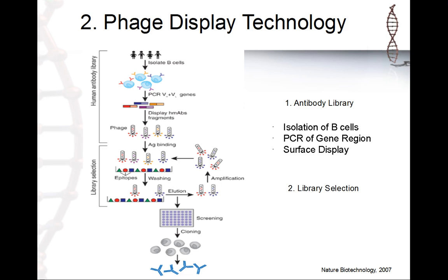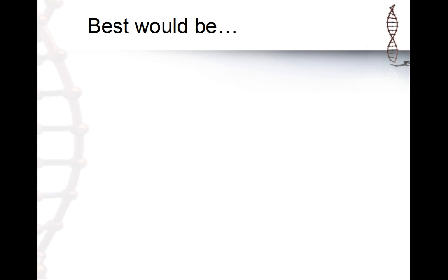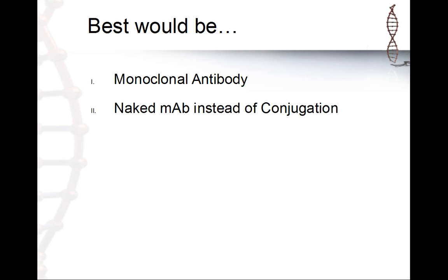The best approach if your interest is to produce monoclonal antibodies — and quantity is not the issue — is to use naked monoclonal antibodies instead of conjugation. The problem with conjugated antibodies is that because you have a toxin or radioactive attachment, a doctor must always be present for injection. Every one or two weeks you have to go to the doctor, which is more costly.